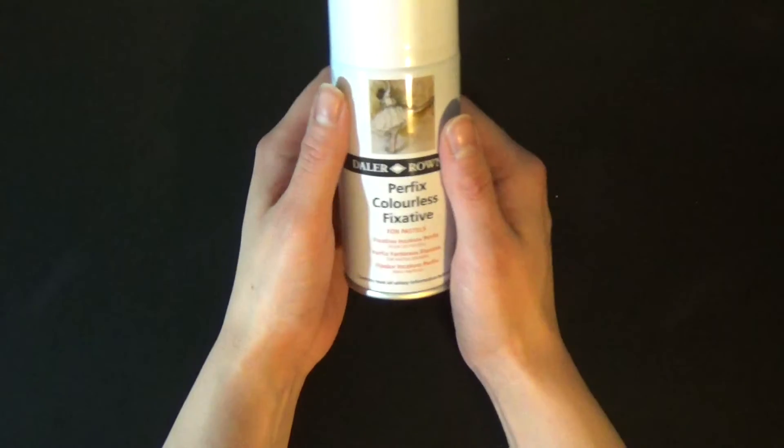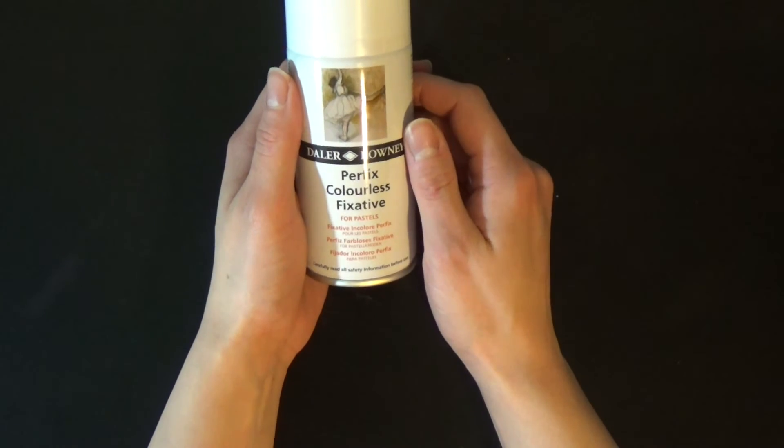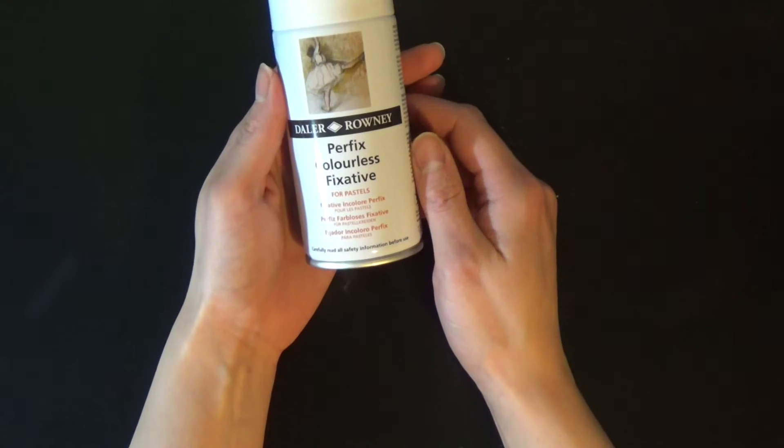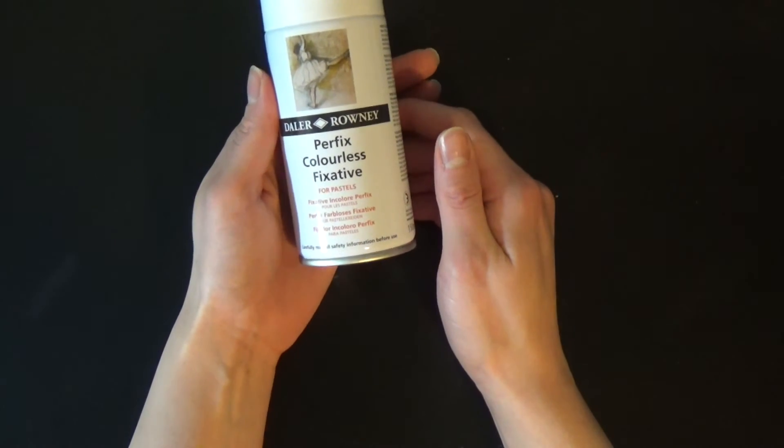And once you've finished your work I find a fixative is really important because graphite can smudge quite easily. So I use Daler Rowney Perfix colorless fixative.